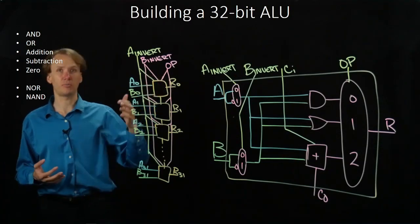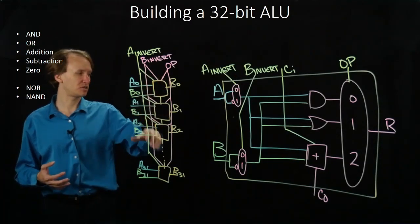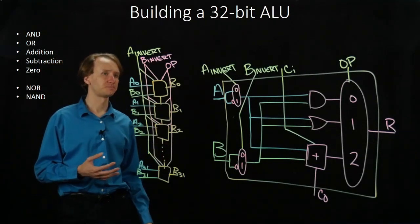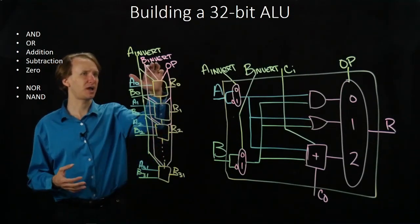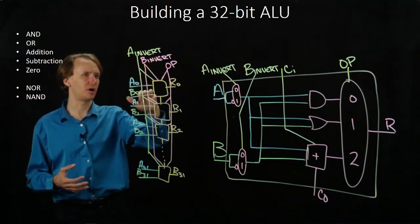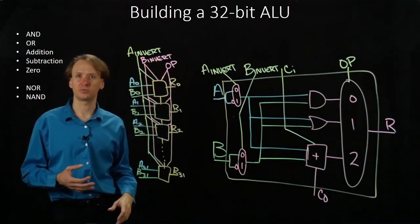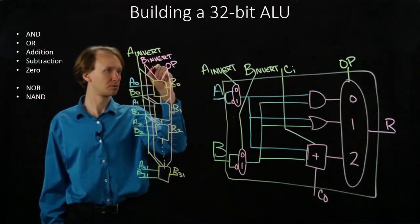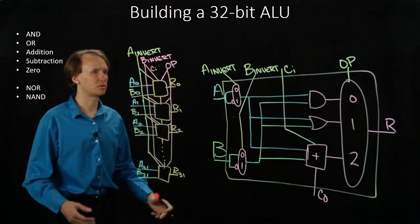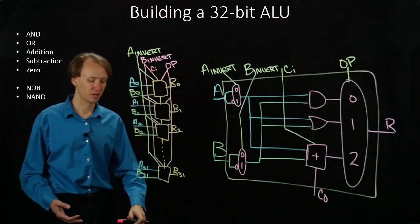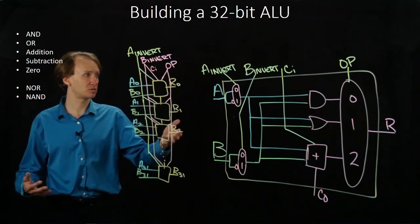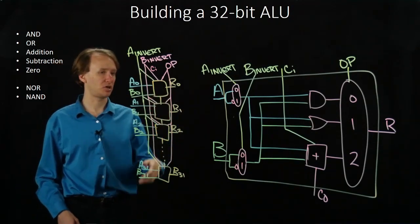For the others, obviously, it's bound to the previous carry out. But this means I can actually use this B invert line as my carry in line as well. So I can make a little note that that's also carry in as well as B invert. But that's only true for the top ALU. For all the others, the carry in is bound to the previous carry out.